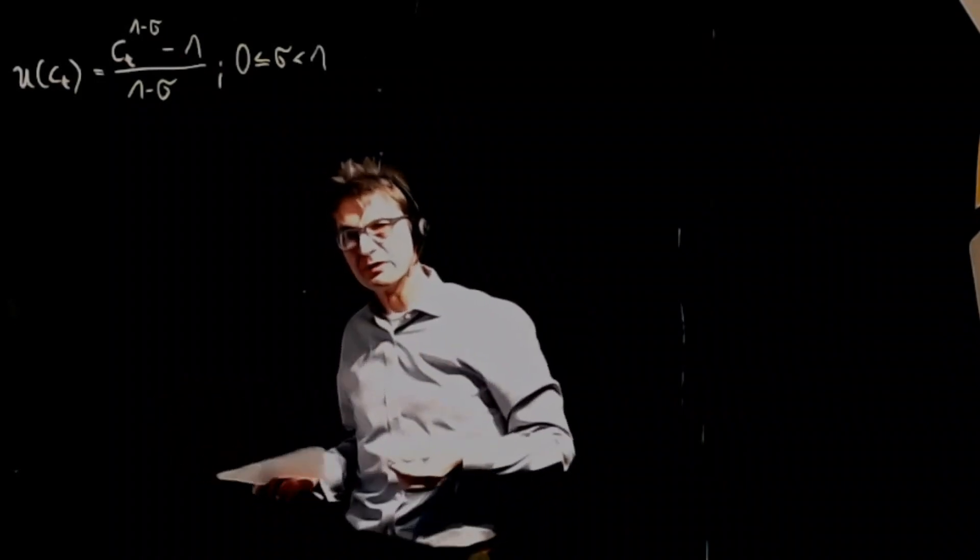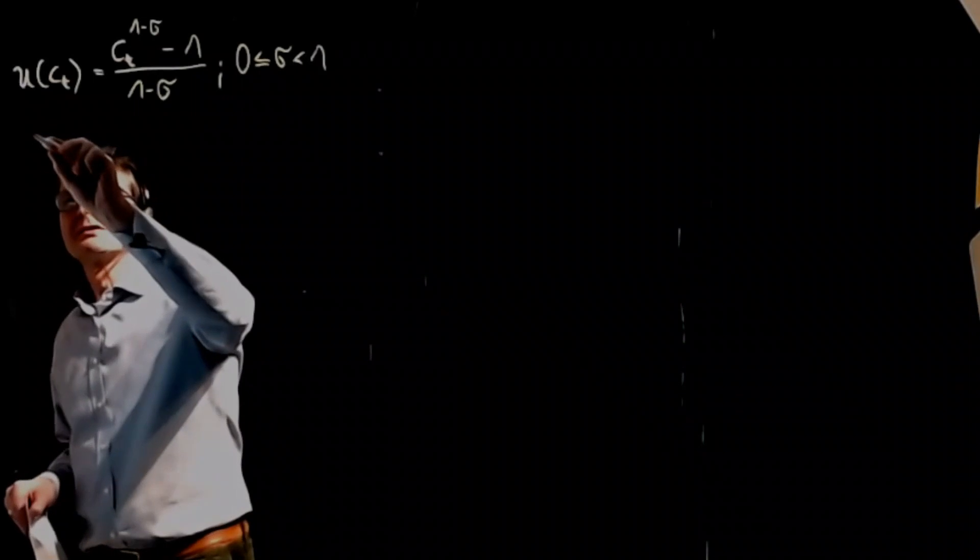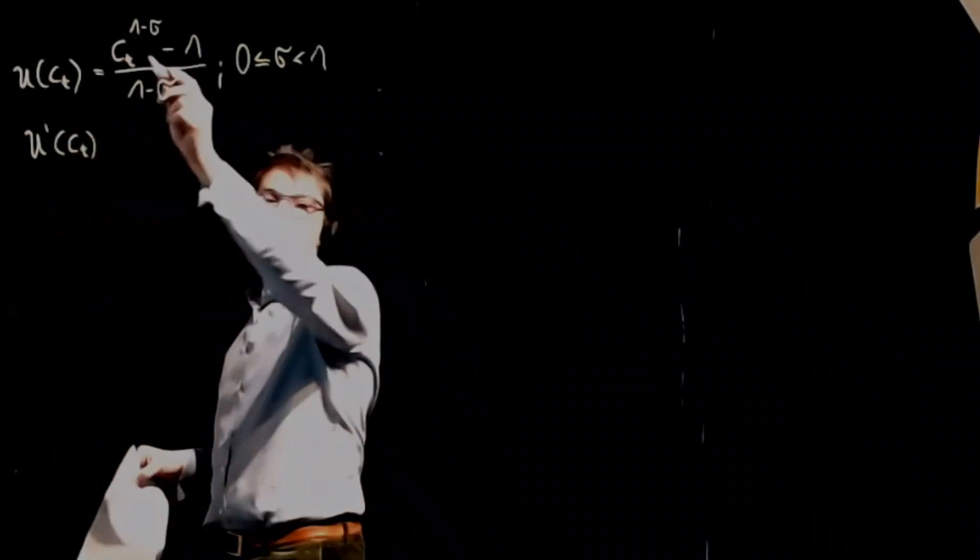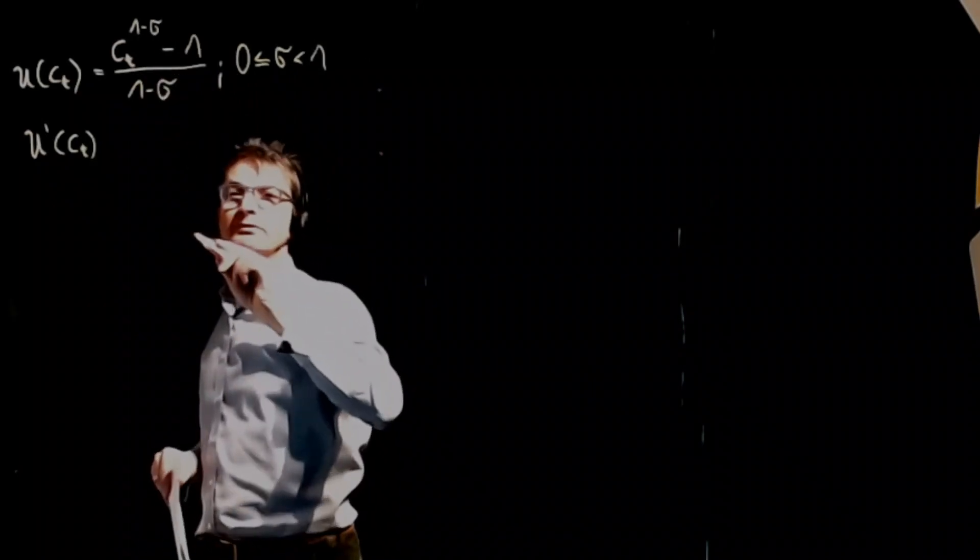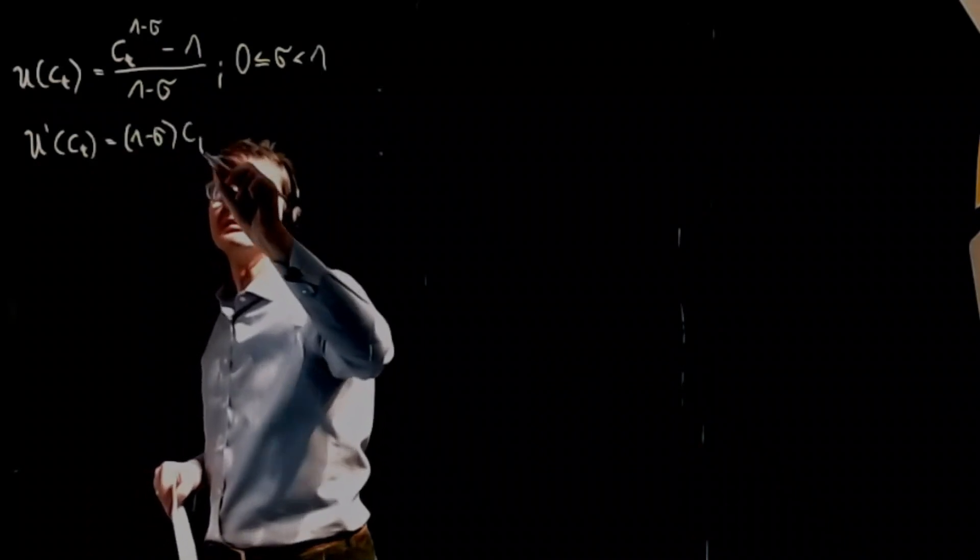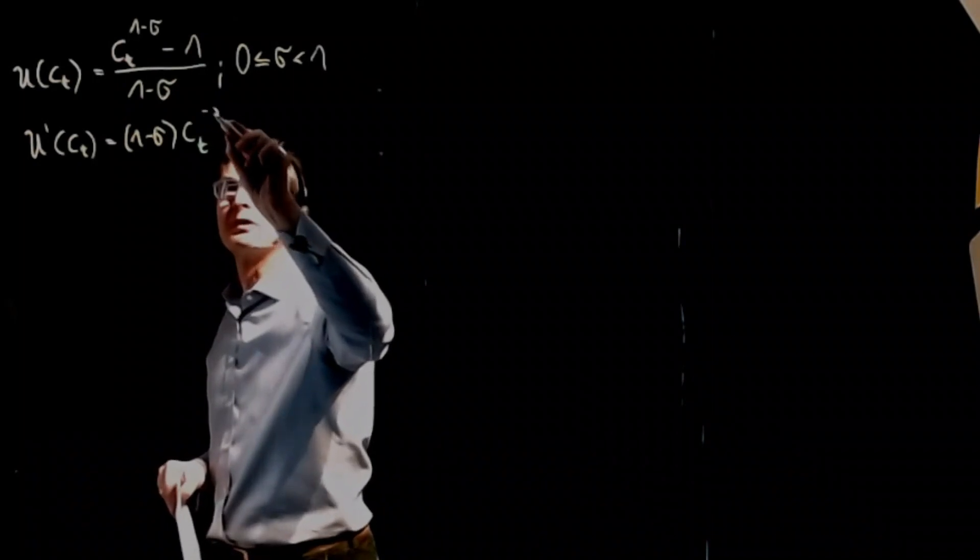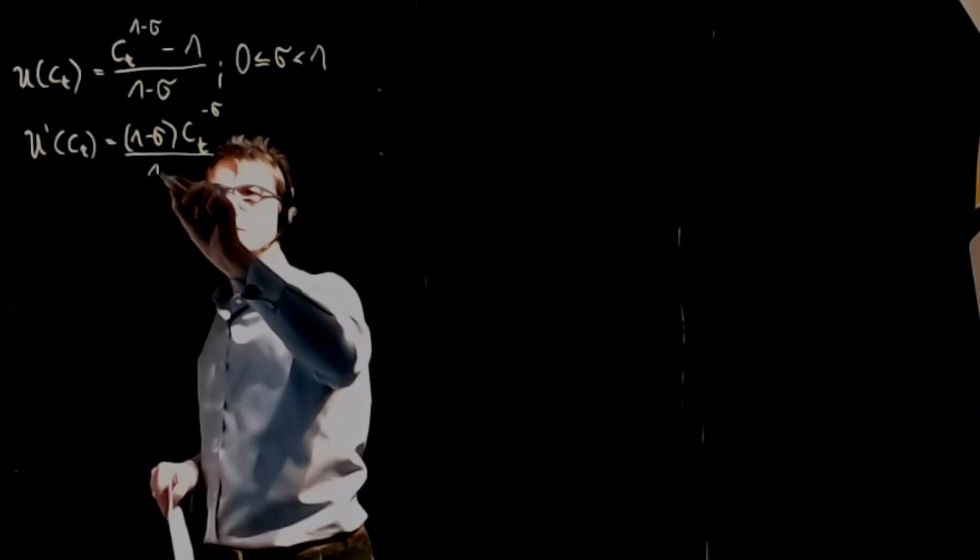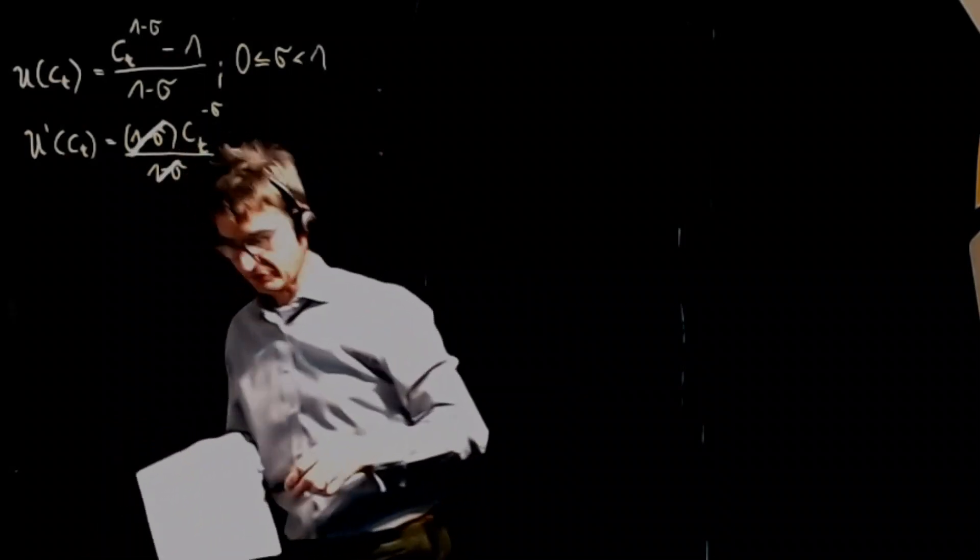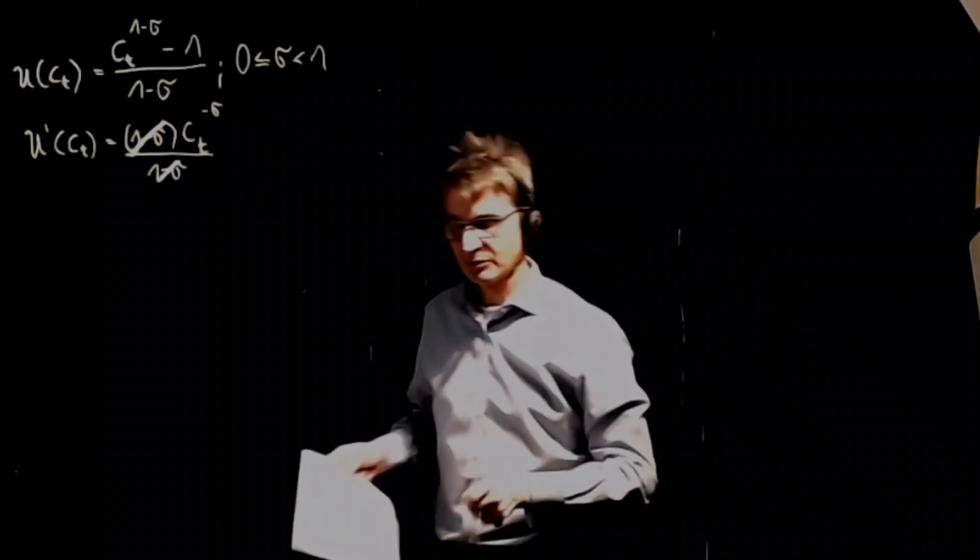Now in order to observe the curvature and the slope of this function, have a look at the first derivative. The first derivative of CT, well, we just take the first derivative of the numerator which is 1 minus sigma CT to the power of minus sigma. But this is divided by 1 minus sigma, so we can basically simplify and erase this. So it's just CT to the power of minus sigma. Apparently, this is larger than 0.